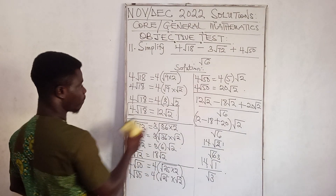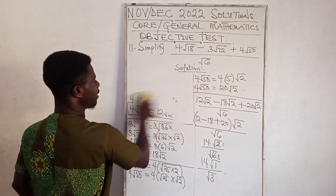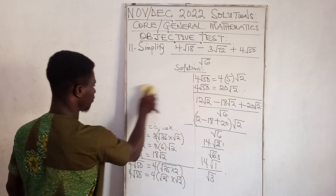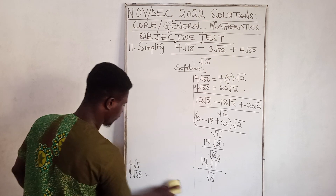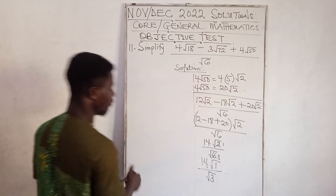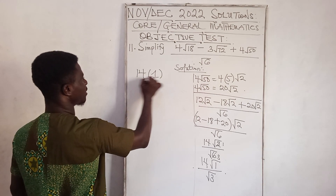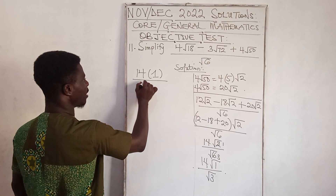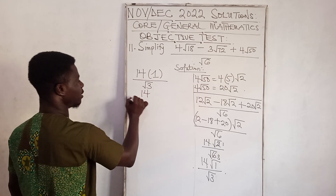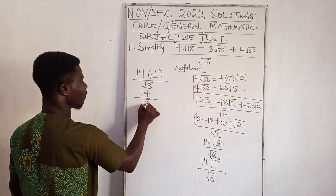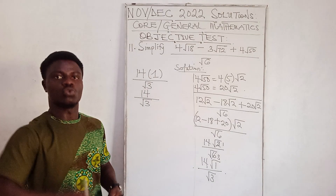We can proceed and write √1 equals 1. So we have 14 times 1 divided by √3, which gives 14 divided by √3. Now we need to rationalize the denominator to remove the irrational number from the denominator.